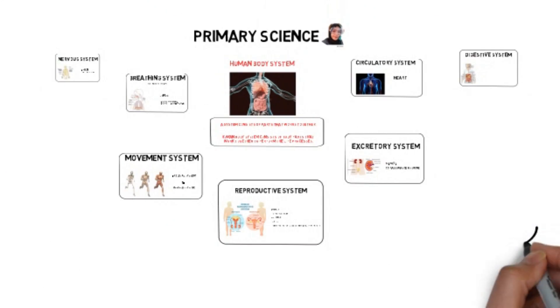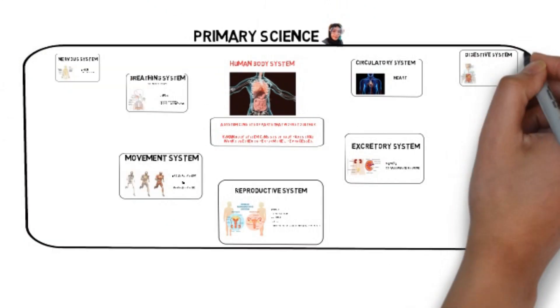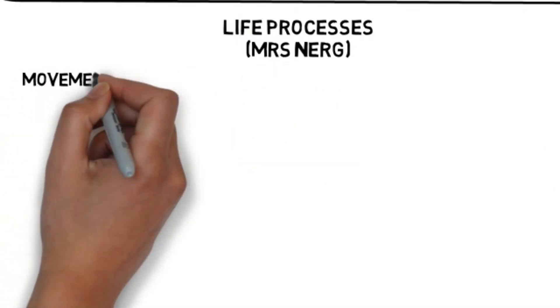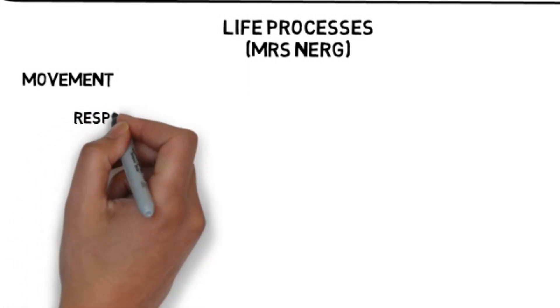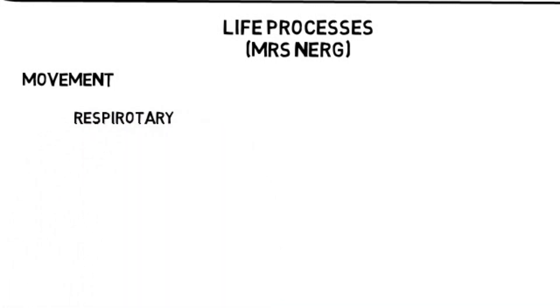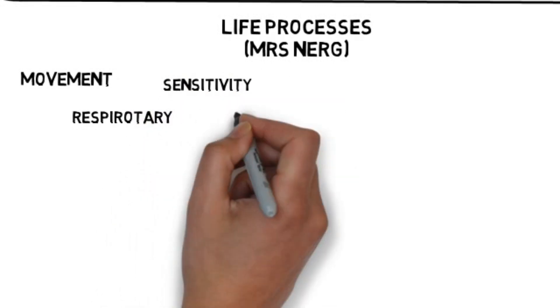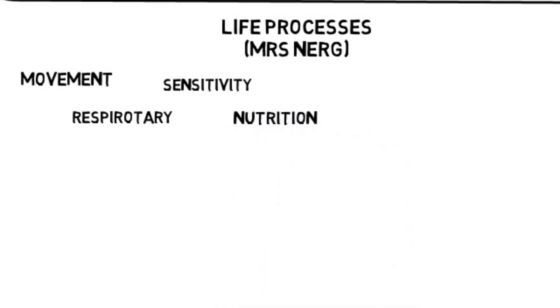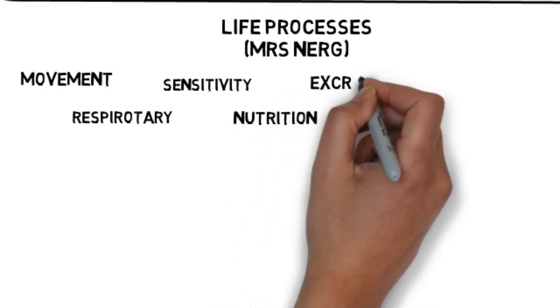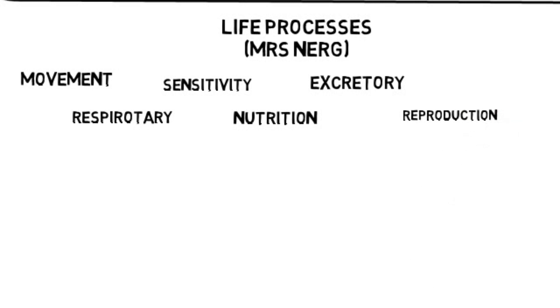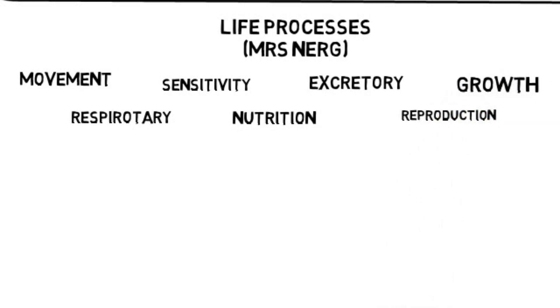All of these systems work together to function the life processes, or what we usually call as MRS NERG. M stands for movement, R stands for respiratory, S stands for sensitivity, N nutrition, E excretory, R reproduction, and G growth.